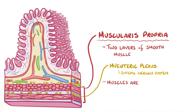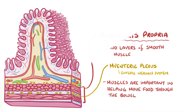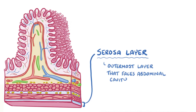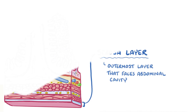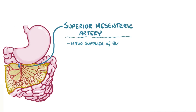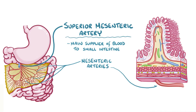These muscles are particularly important in helping to move food through the bowel. Finally, there's the serosa layer, which is the outermost layer of the small intestines that faces the abdominal cavity. The superior mesenteric artery is the main supplier of blood to the small intestine. Branches of the arteries spread through the mesentery, called mesenteric arteries, and penetrate the serosa layer and travel to the submucosa where they branch further into arterioles.